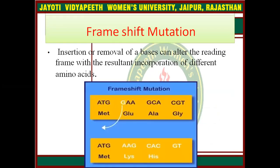Frameshift mutation: insertion or removal of a base can alter the reading frame, resulting in incorporation of different amino acids. For example, in the sequence GCA, GCA, CGT — the shuffling of bases changes the reading frame entirely, producing a completely different set of codons and amino acids downstream.